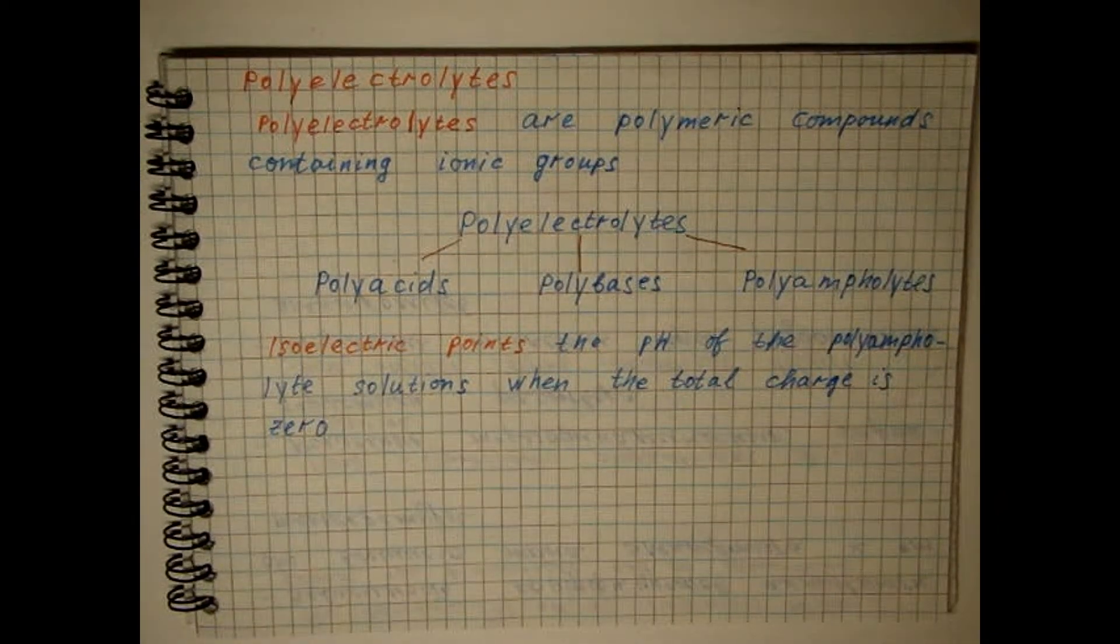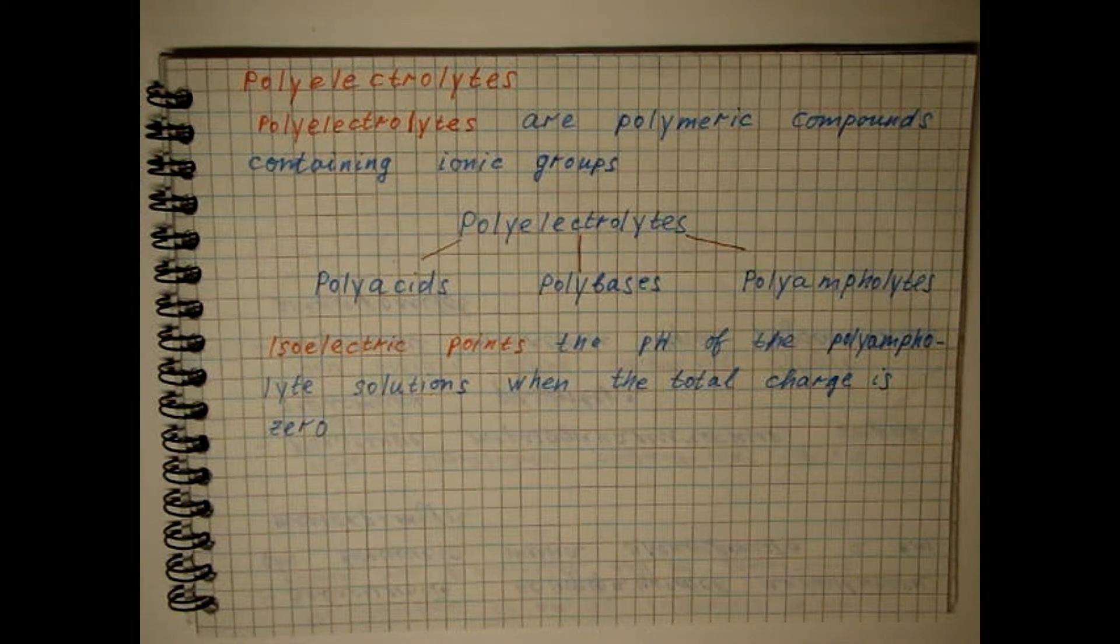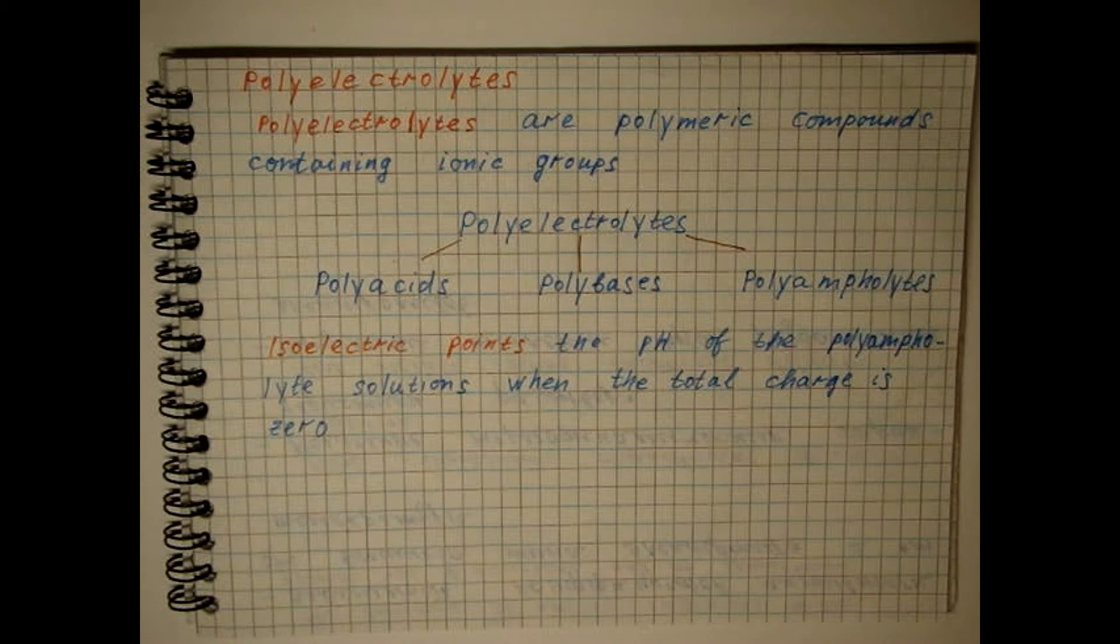Proteins and nucleic acids are polyamphylites. Polyelectrolytes can be linear and spatially cross-linked. Last, used as ion-exchange materials.